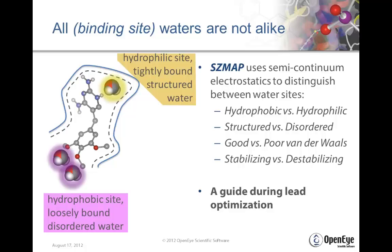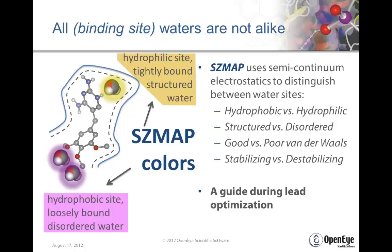SHMAP can distinguish easily between different types of water sites. There are hydrophilic sites, where water is tightly bound and structured, and hydrophobic sites, where water is loosely bound and often disordered. It can also identify good and poor van der Waals interactions with water, and regions where water is either stabilizing or destabilizing the binding event. We'll be using a color scheme where hydrophilic sites are in gold and hydrophobic sites are in purple.